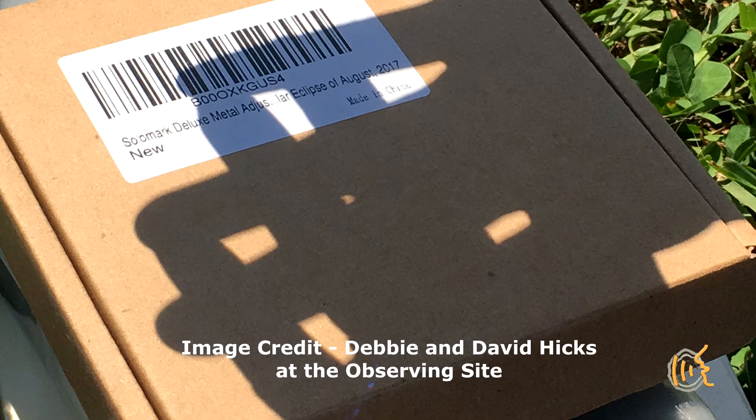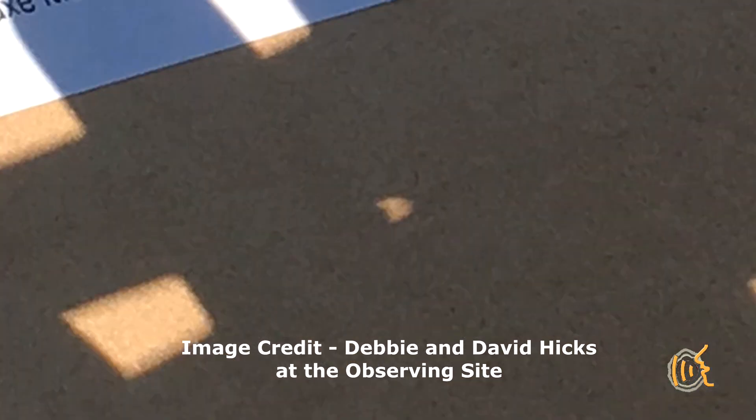Look under trees to see how the natural pinholes created by the overlapping leaves cause multiple projected crescents. These next images were done by folks observing the eclipse with me. One person made pinholes by crossing his fingers. You see that the smallest hole projected the crescent. This crescent was projected through the vent hole in a baseball cap. It's really fun to see and now you understand what is happening.